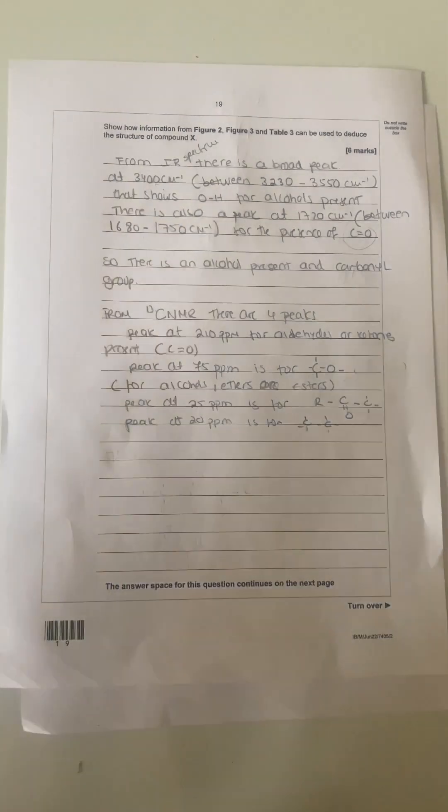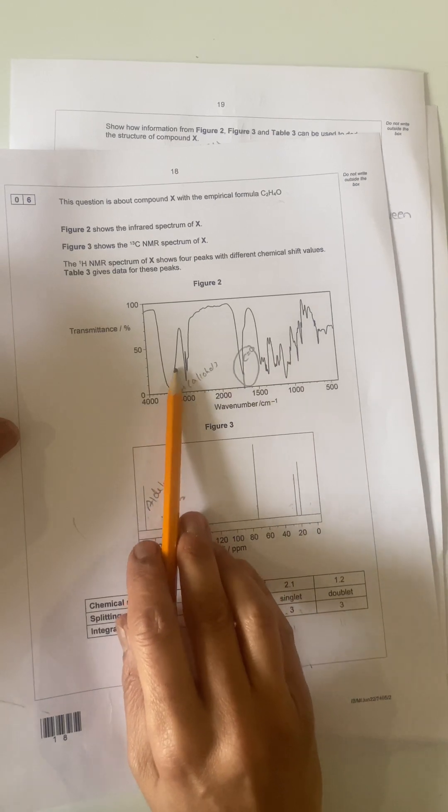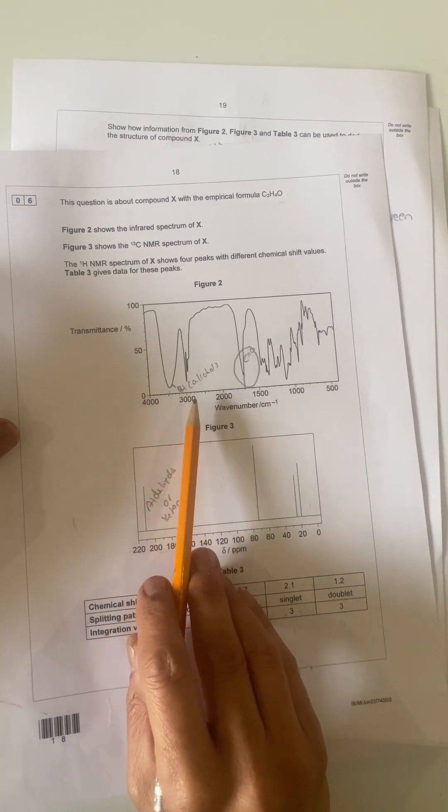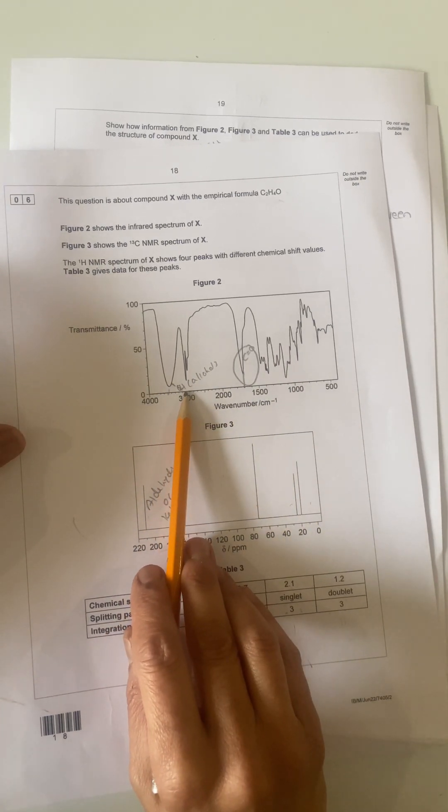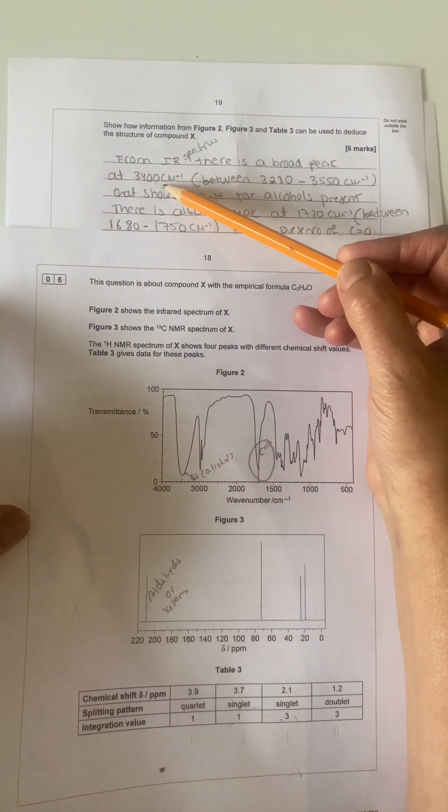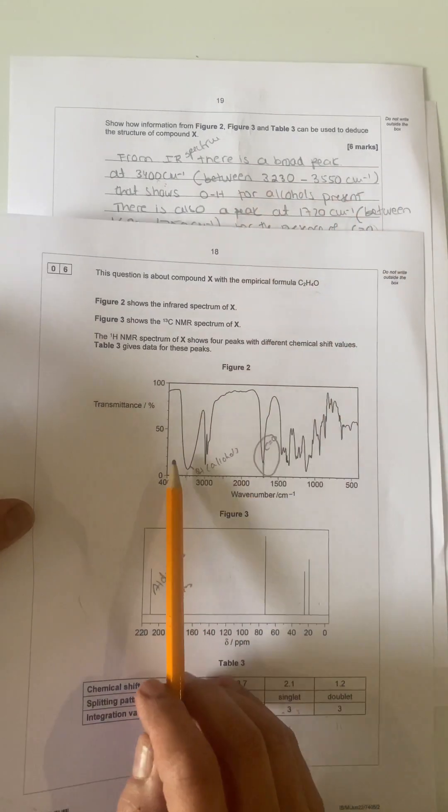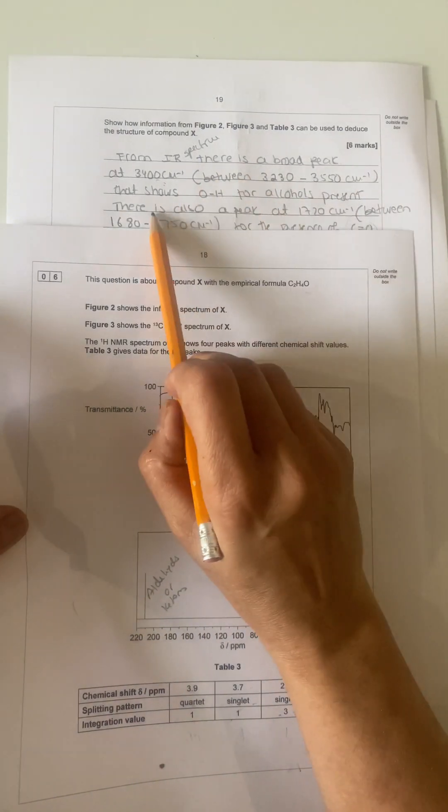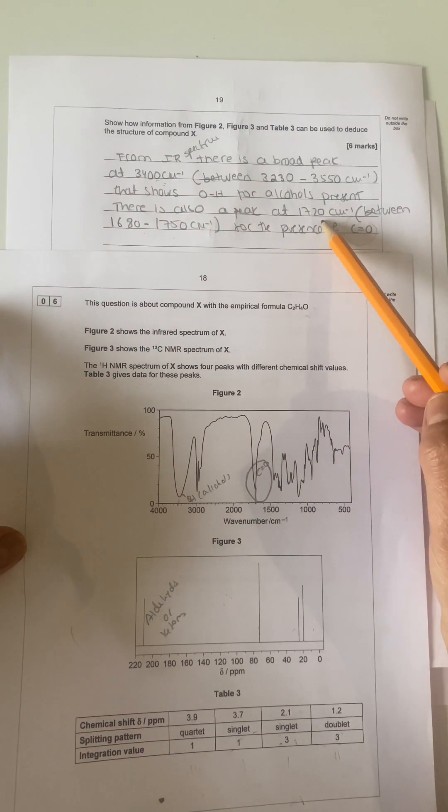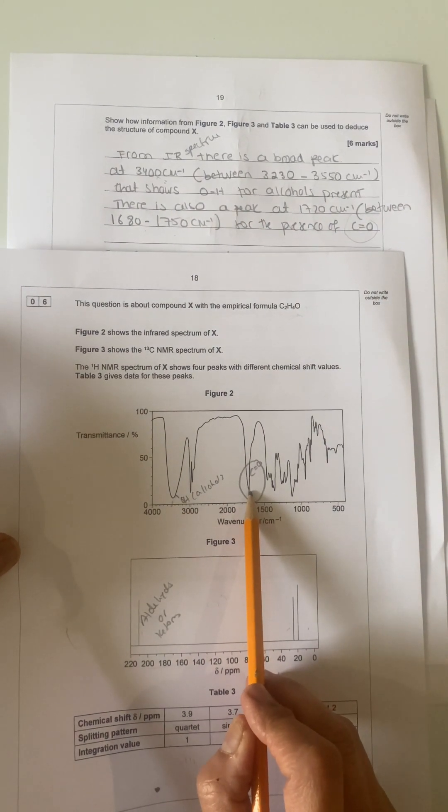If you look at the infrared spectrum, you can see there's a broad peak here, which is for OH of alcohols. That comes at 3470 wavenumbers. Between this value here, alcohols are present. And then there is another peak at 1720, which is this one here, for the presence of C=O.